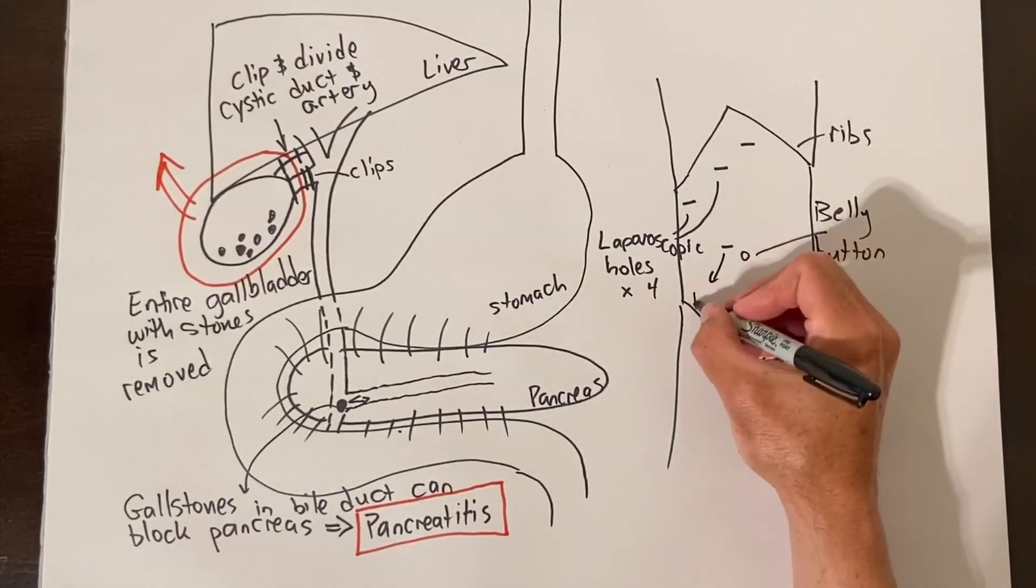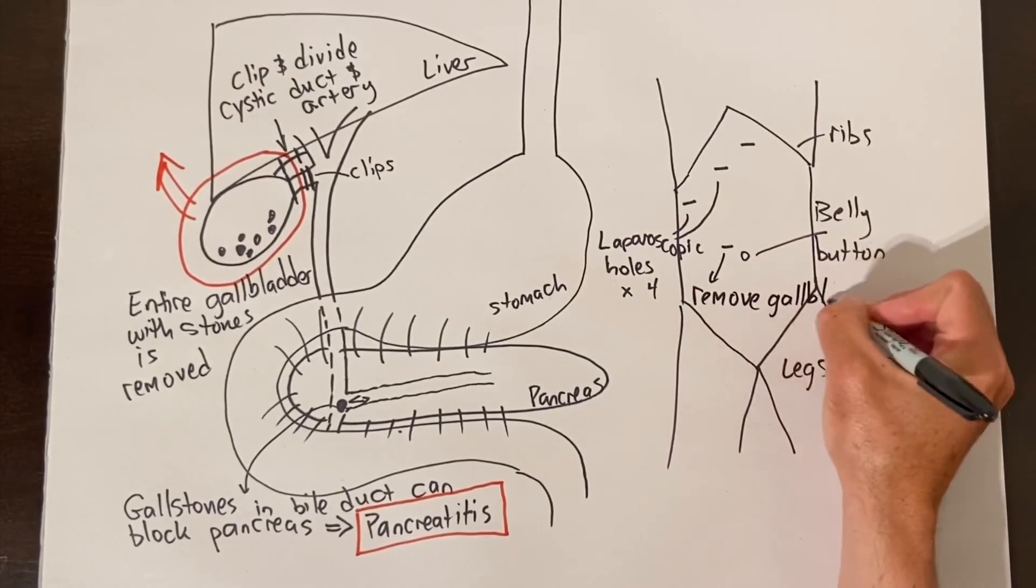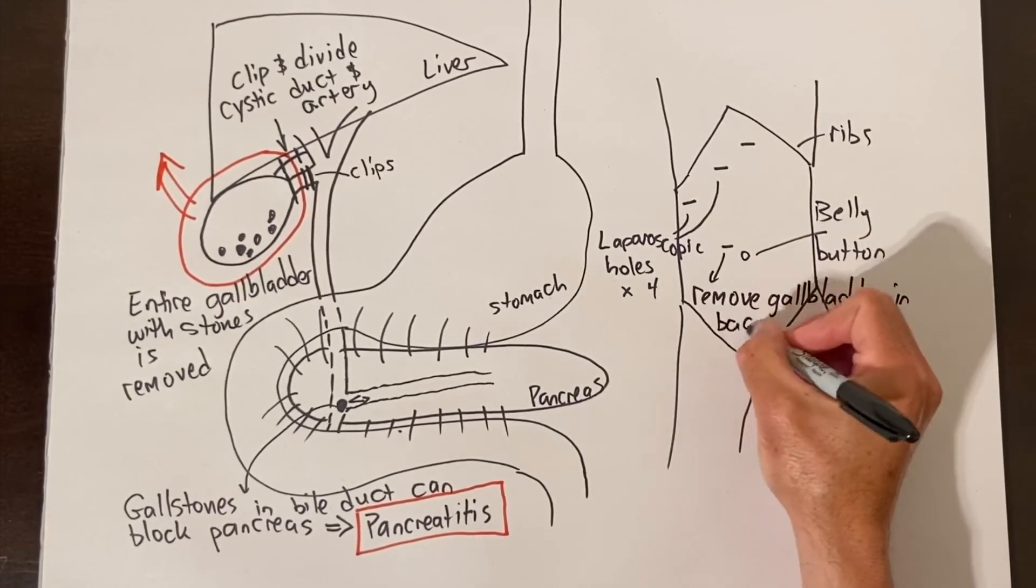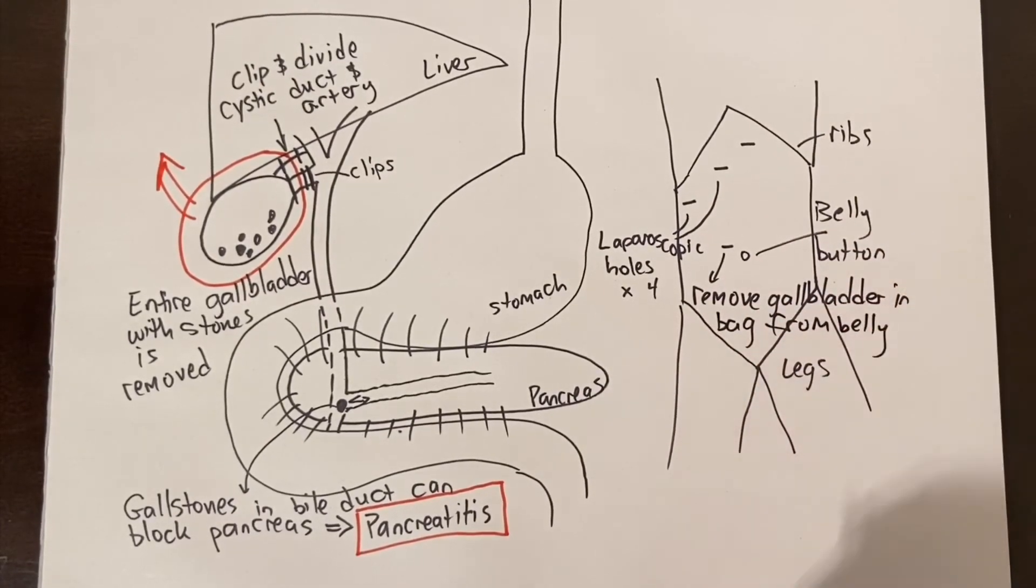Once the gallbladder is removed we pull it out of the belly in a bag. Most of the time cholecystectomy surgery is done easily as a day surgery but it can be harder if you have an active infection or acute cholecystitis which commonly requires hospitalization to treat the infection and also to do the surgery.